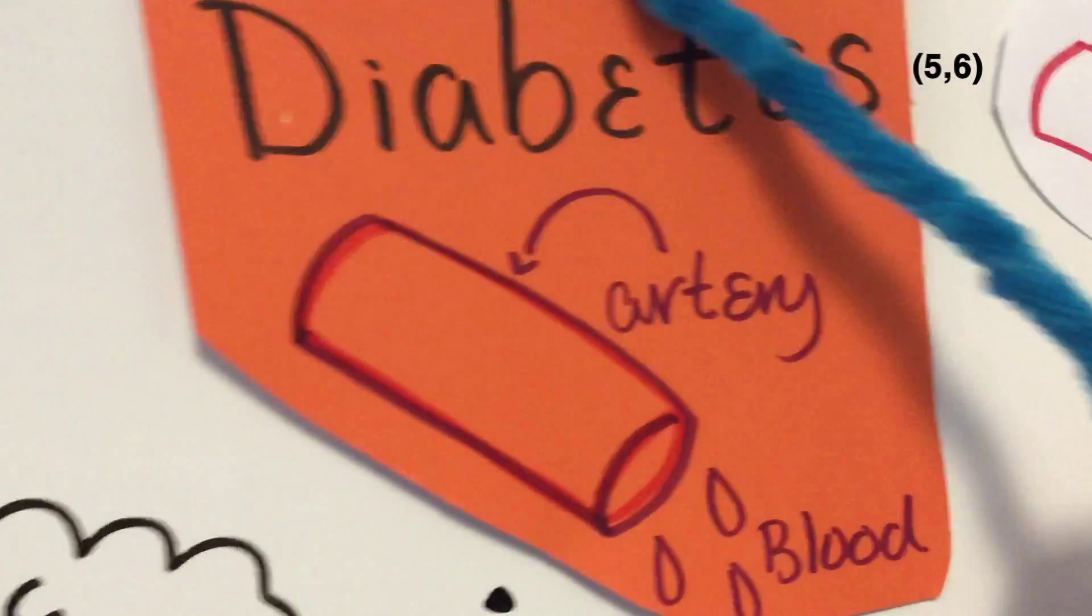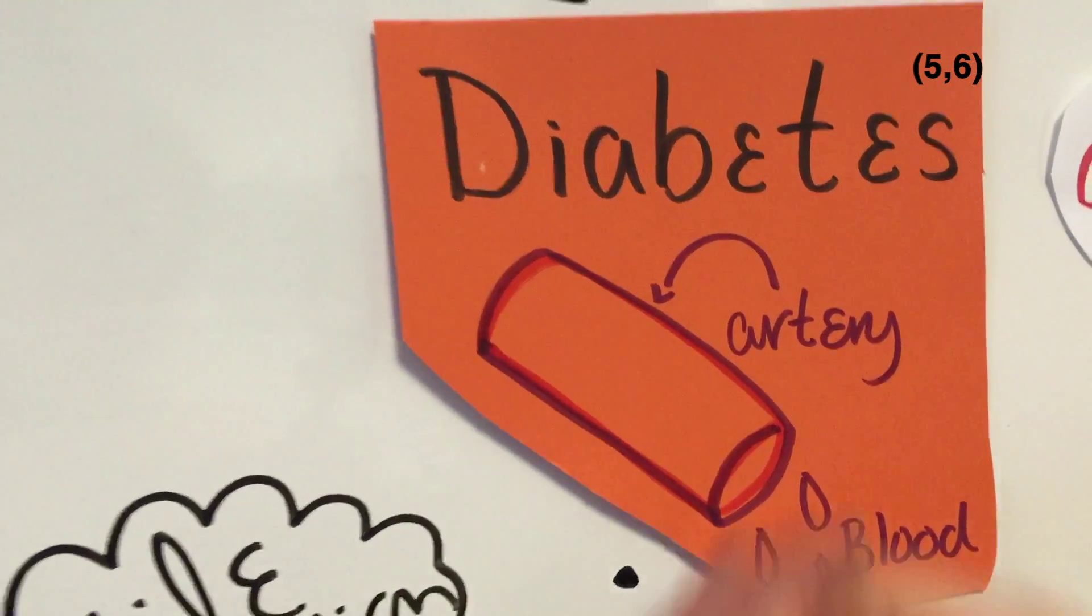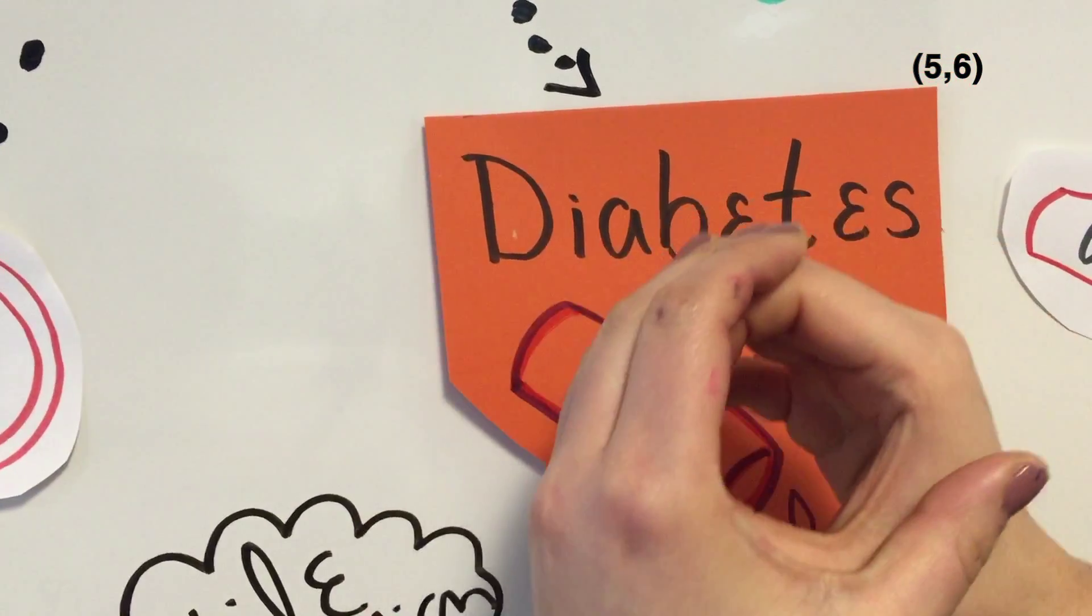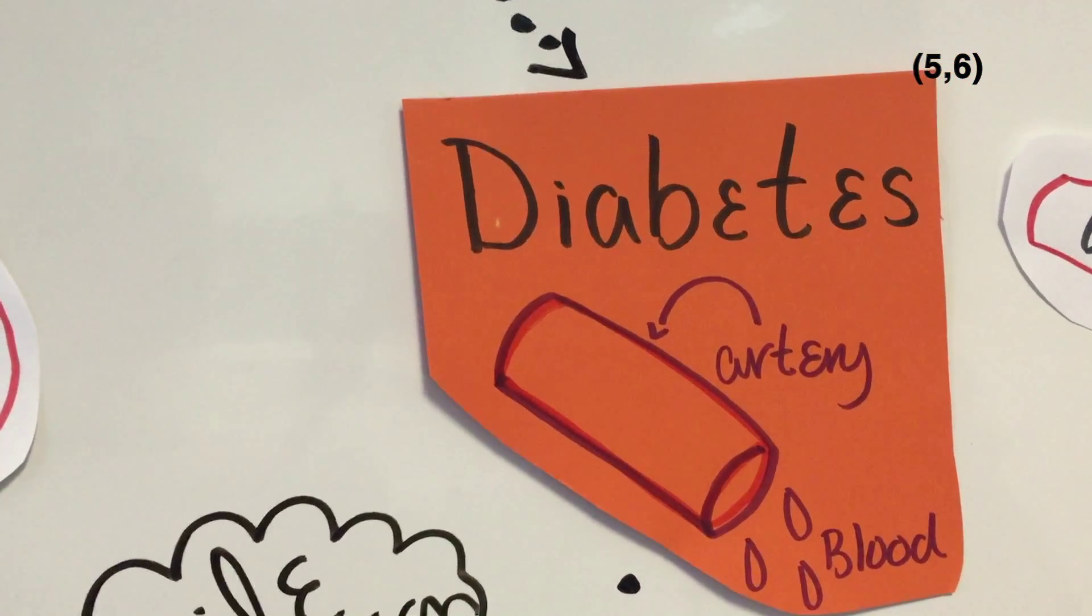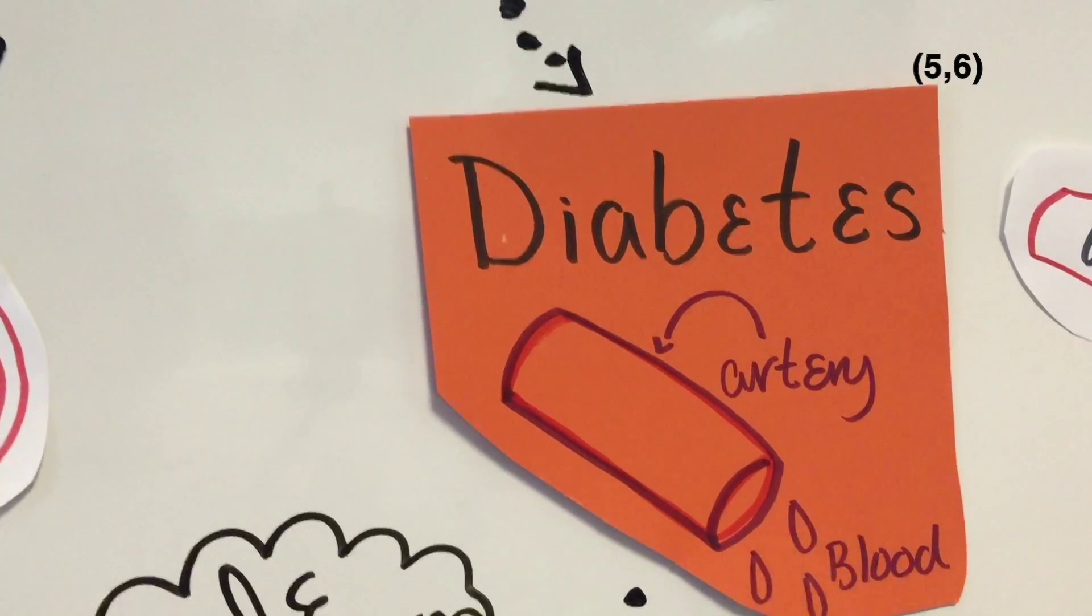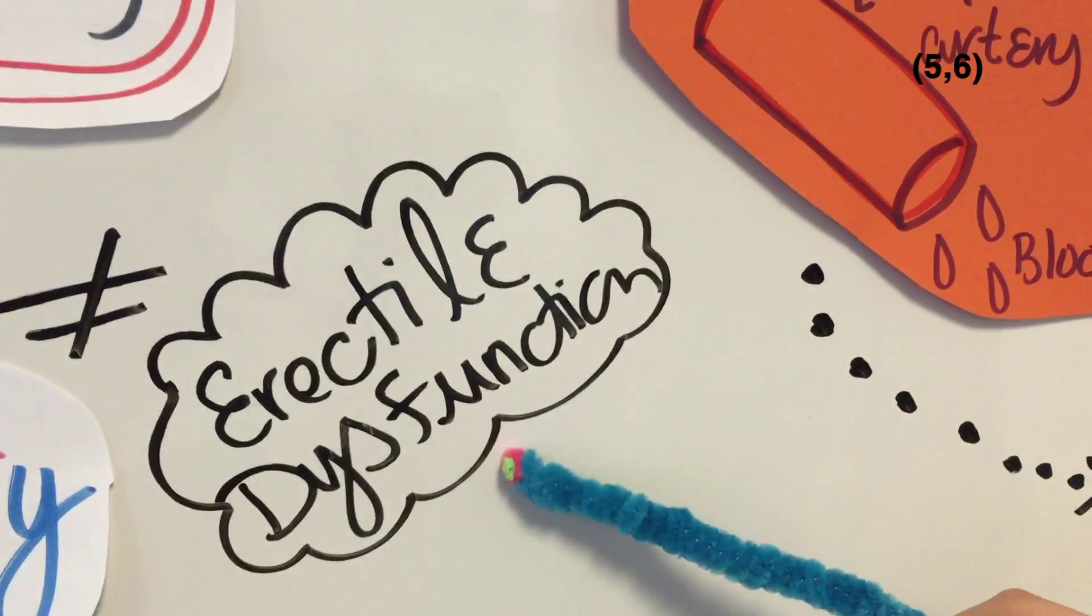Let's take diabetes for instance. Diabetic patients often have trouble dilating their blood vessels, which means to become bigger. That actually impairs the blood flow. So impaired blood flow increases chance of erectile dysfunction.